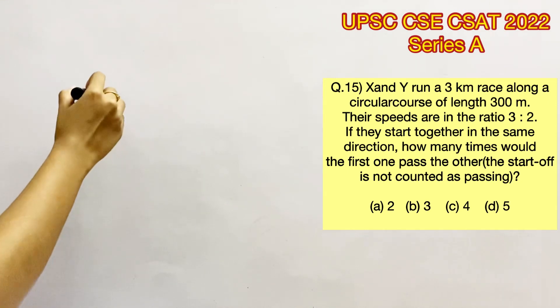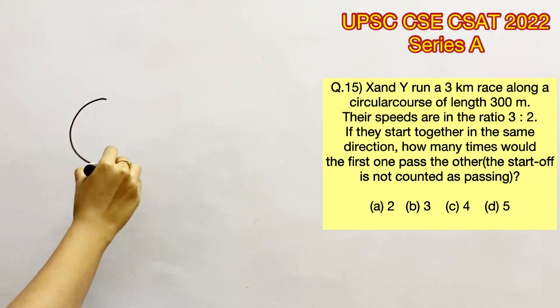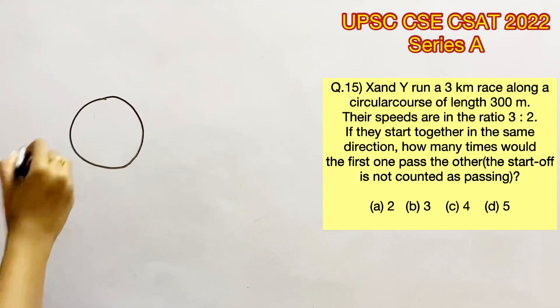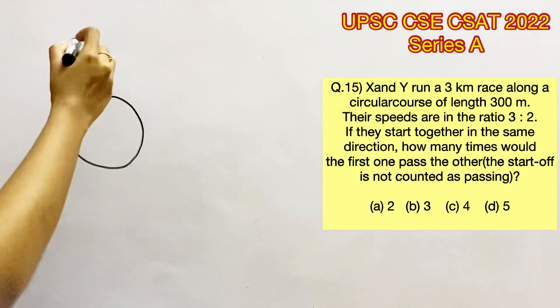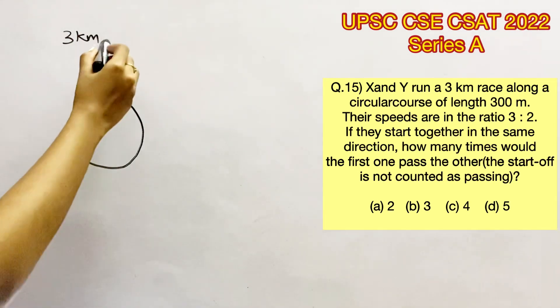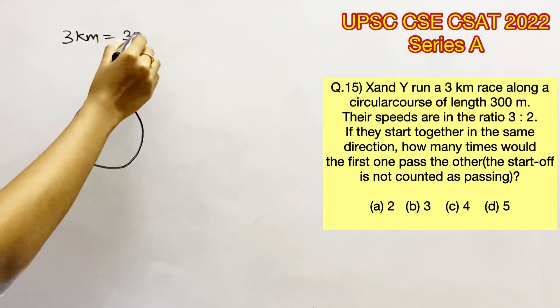So the question says it's a circular course of length 300 meters. It's a circular track and the length of the track is 300 meters. X and Y run a 3 kilometer race along this course. So 3 kilometers in meters would be 3000 meters.